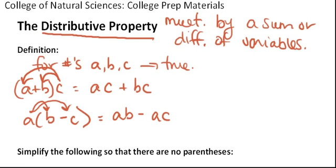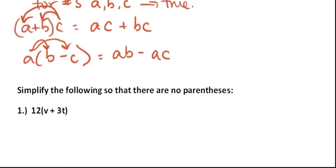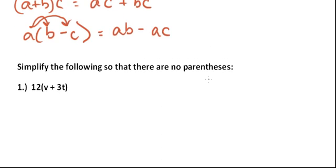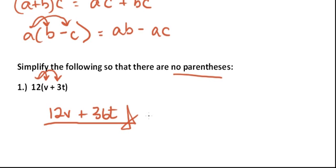Let's do some problems that give us some practice doing that. So here, number one, we have to multiply this term out, simplifying so there's no parentheses left. So let's just distribute this multiplication. That would give us 12v plus 36t. And that's our answer.